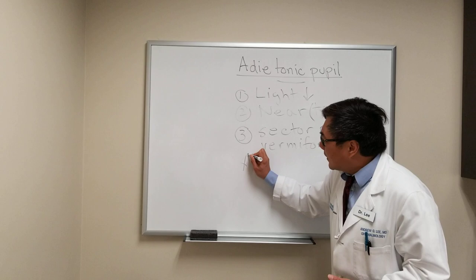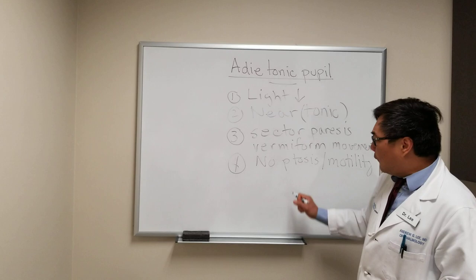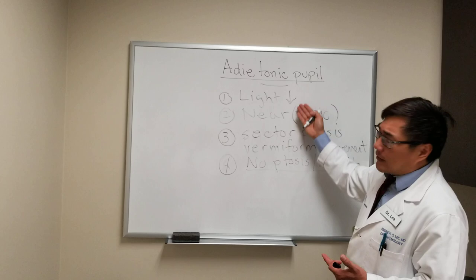Because only the pupils are involved, we can't have any ptosis and we can't have any other motility deficit, because the Adie's tonic pupil is a lesion in the ciliary ganglion. Therefore, we can't have any other third nerve findings. We have to make sure it's not a third nerve palsy, because a third nerve palsy can cause something that looks like a tonic pupil with light-near dissociation — resulting from aberrant regeneration.